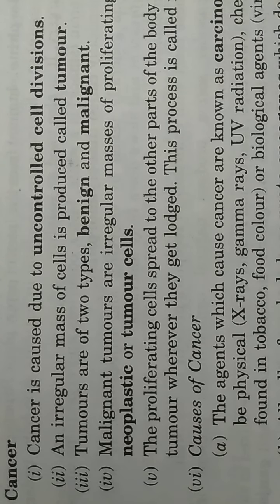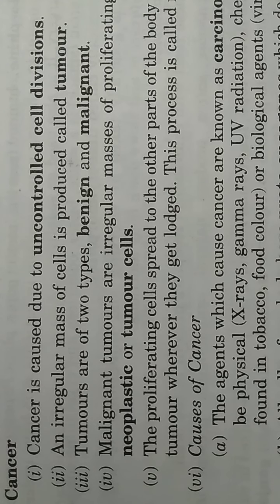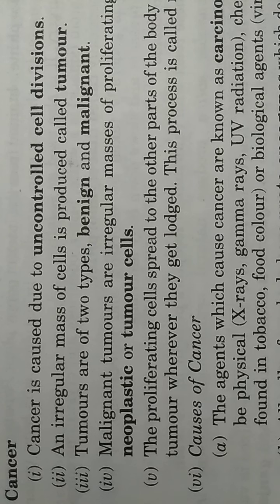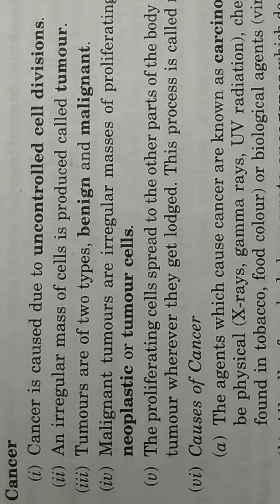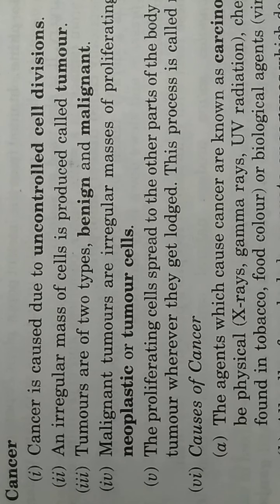Cancer is caused due to uncontrolled cell divisions. Cancer का जो मुख्य कारण है वो cell divisions होते हैं जो की uncontrolled तरीके से होते हैं। यानि जब हमारे body के अंदर cells की growth, cell का division uncontrolled तरीके से होने लगता है, तब हम उसको cancer की शुरुवात या cancer का disorder कहते हैं।